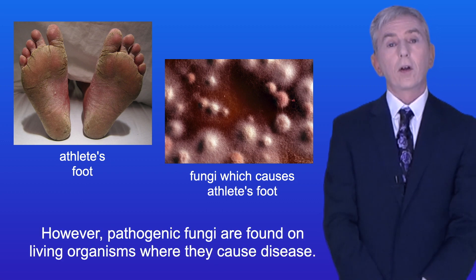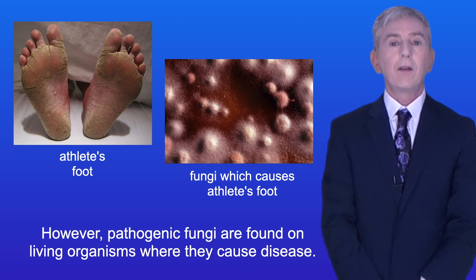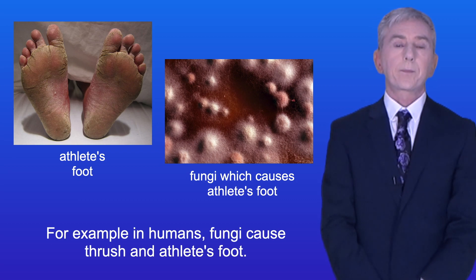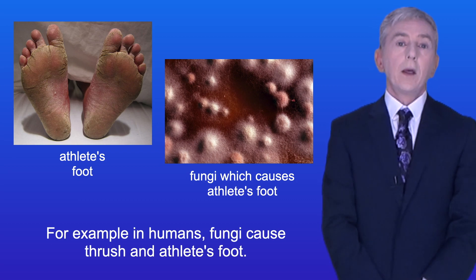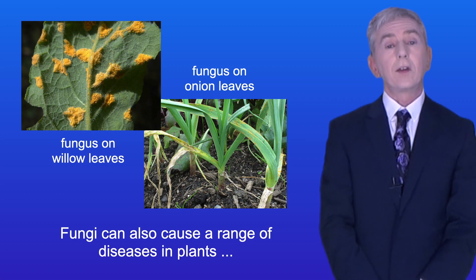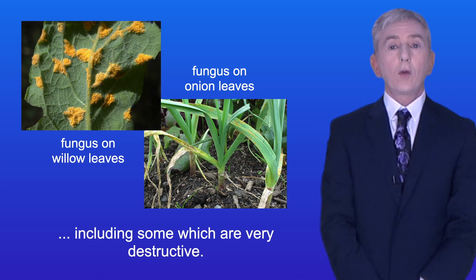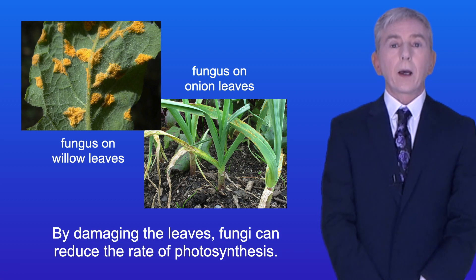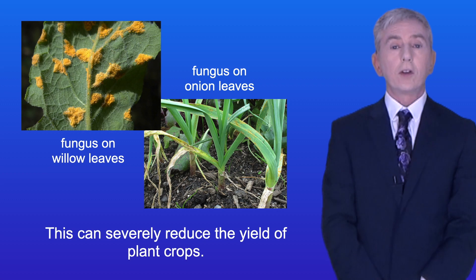Pathogenic fungi are found on living organisms, where they cause disease. For example, in humans, fungi cause thrush and athlete's foot. Fungi can also cause a range of diseases in plants, including some which are very destructive. By damaging the leaves, fungi can reduce the rate of photosynthesis, and this can severely reduce the yield of plant crops.